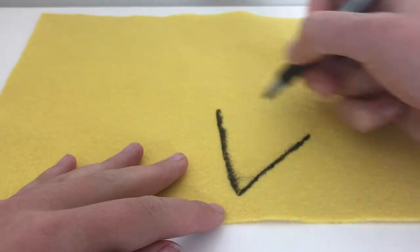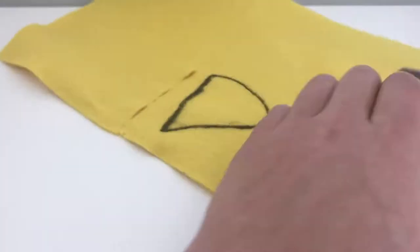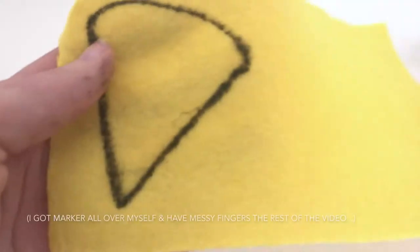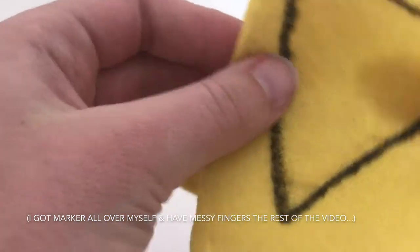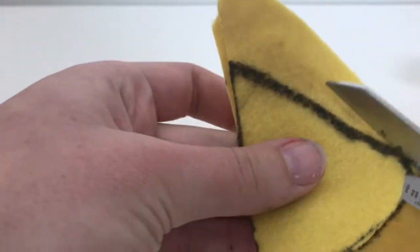To start, draw a triangle with a curved edge, a pizza shape, onto the yellow felt. Fold over the felt so it's doubled over to cut two shapes at once. Cut the shapes with scissors.